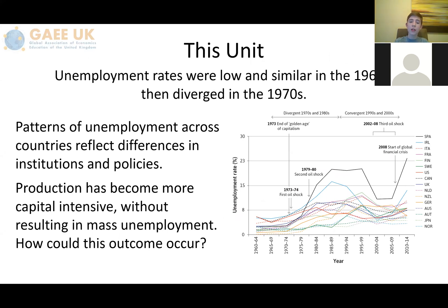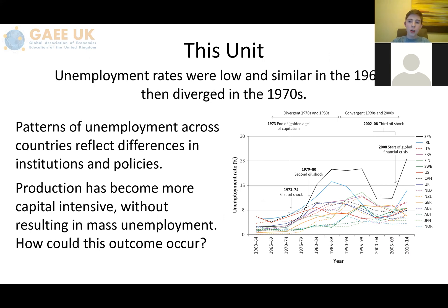The first piece of the puzzle that we will be looking at is unemployment. As shown by the graph depicting unemployment by year versus real wage growth, there are significant economic events that set off a sharp increase or decrease in unemployment across countries. The differences reflect changes in institutions and policies across countries. Production has become more capital intensive without resulting in mass unemployment. How could this outcome occur?